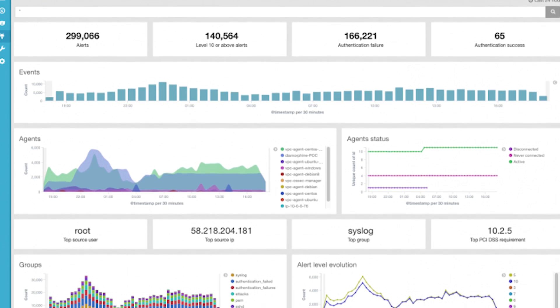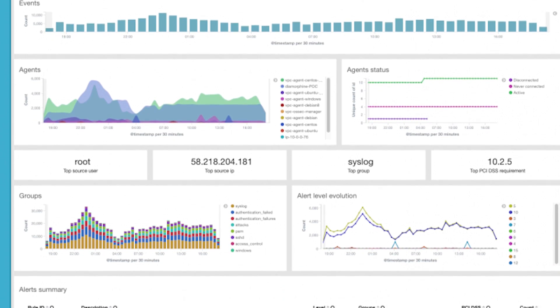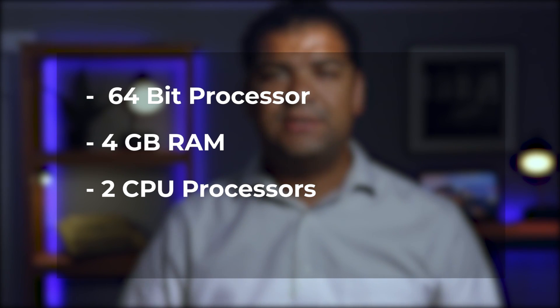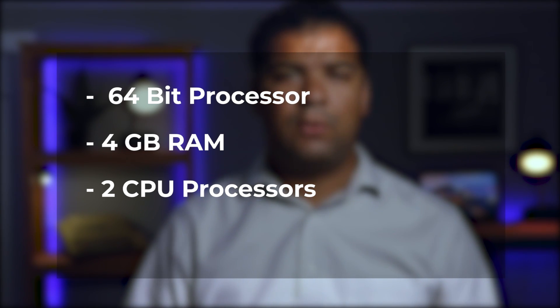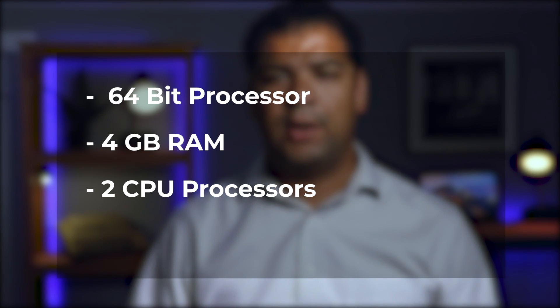Tool number seven is Wazuh. Wazuh is a component that goes on top of the ELK Stack and is a really nice threat detection and security monitoring solution. It requires Elasticsearch and Kibana — it's really built on top of that. You can install it all on one system, or on two separate systems and correlate them. Wazuh requires four gigs of RAM, two CPUs, and a 64-bit operating system to run on.